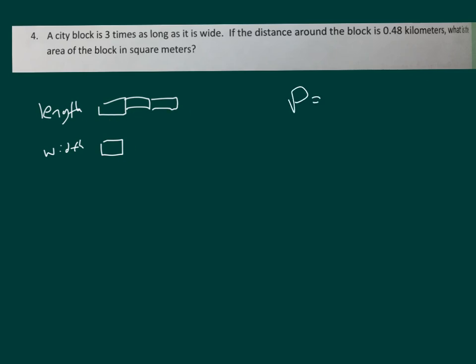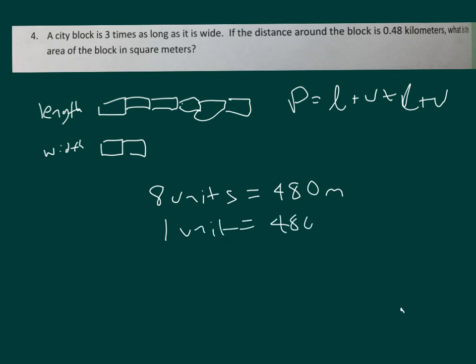For perimeter, that's length plus width plus length plus width. So let's make this 1, 2, 3 more there, and 1 more for the width. So we have 8 units all together, equaling 480 meters. I changed 0.48 kilometers to meters to make it easier to solve. One unit, then, is equal to 480 divided by 8, which equals 60 meters.